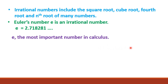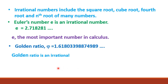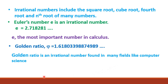One more example: the Golden ratio, phi, which is equal to 1.618033 and so on. The golden ratio is an irrational number found in many fields like computer science, design, art, architecture, and so on.